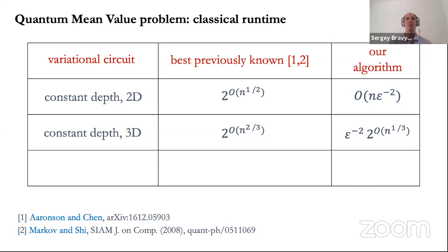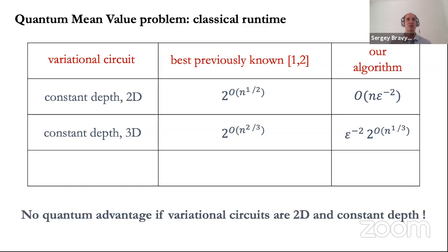I only consider constant depth and connectivity that is either two-dimensional or three-dimensional lattices. In the 2D case, our algorithm has runtime linear in the number of qubits — essentially optimal since we need linear time just to examine each gate in the circuit — with an inverse polynomial dependence on precision epsilon. For comparison, the best previously known algorithm, which is tensor network contraction by Markov and Shi, has runtime exponential in the square root of n, but it is essentially an exact algorithm with no dependence on epsilon.